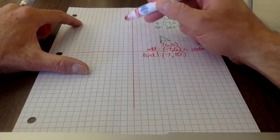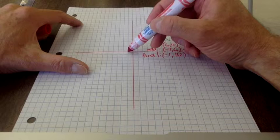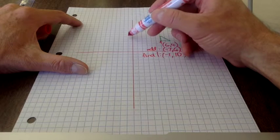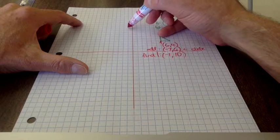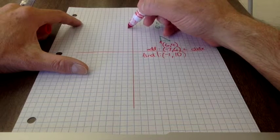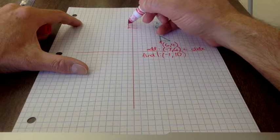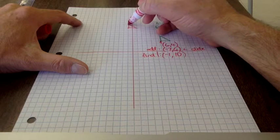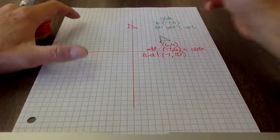So instead of having to do all that counting, you just go to negative one and then two, four, six, eight, ten. So this point becomes here and you build your shape in the new location.